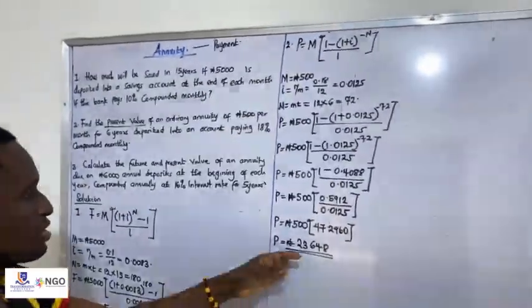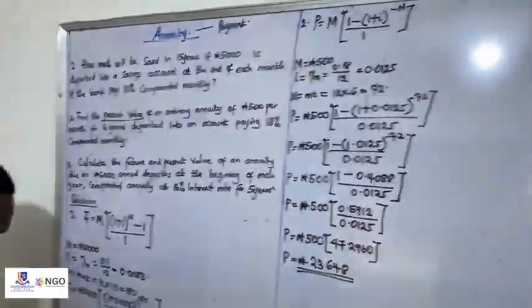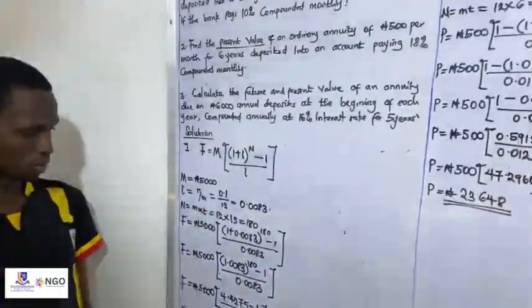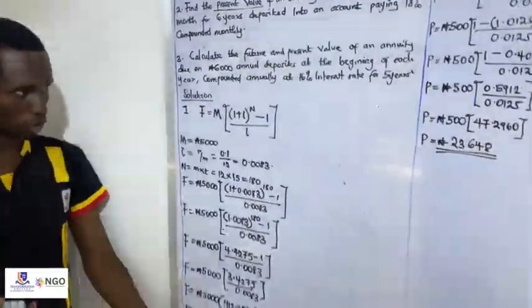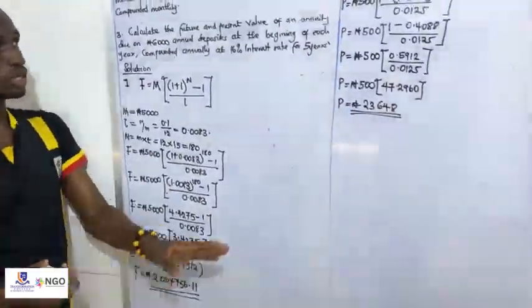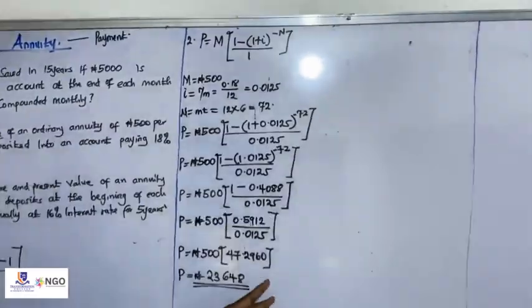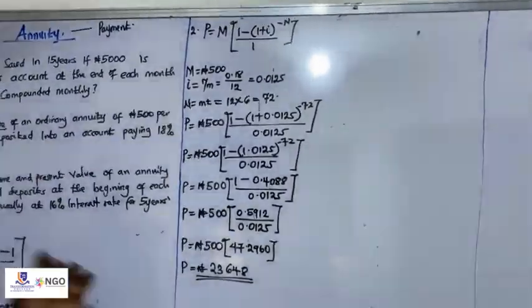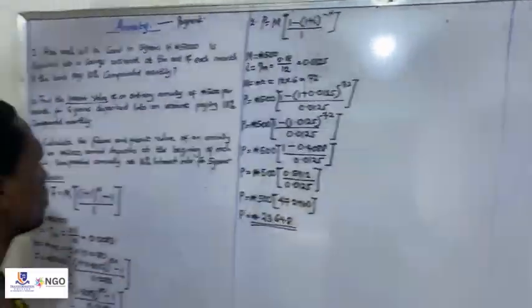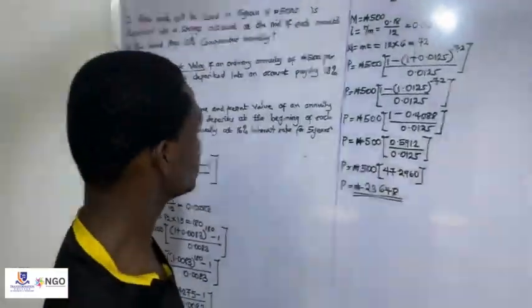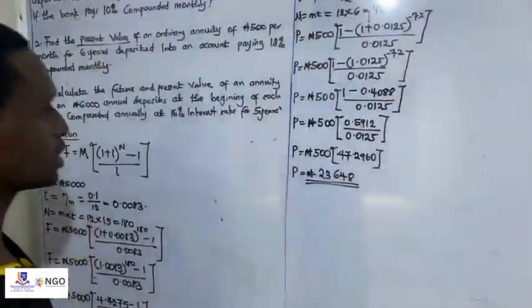Dividing 0.5912 by 0.0125 gives 47.296. So PV = 500 × 47.296 = 23,648. That is the present value. This question calculated for future value; this second question calculates for present value. Now number three.